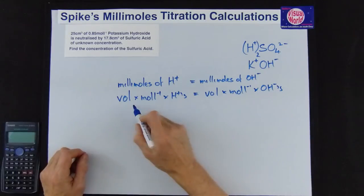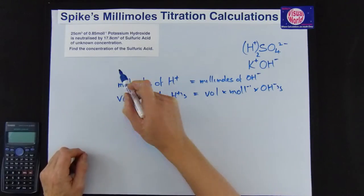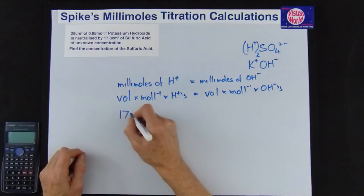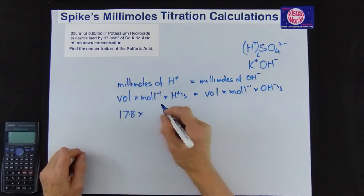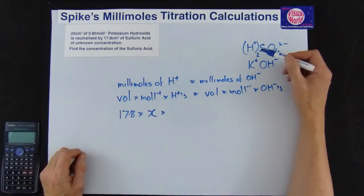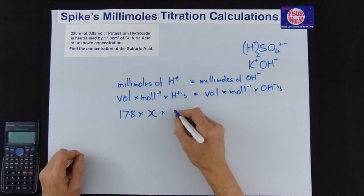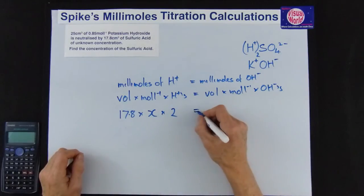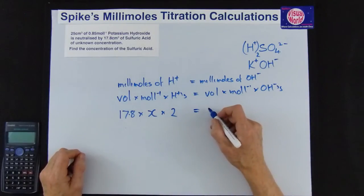So all we do now is put in our values. The volume for the sulfuric acid is 17.8 times the moles per liter is the unknown so we put in X and the number of H+ in the sulfuric acid is 2.